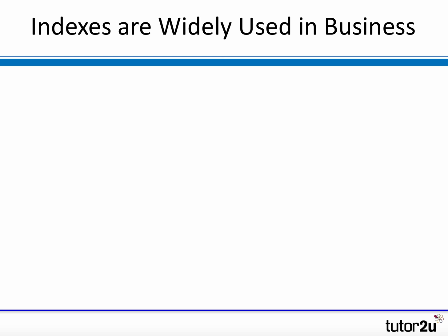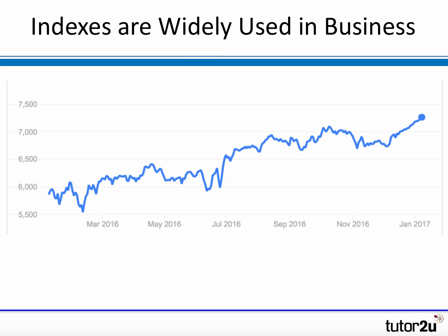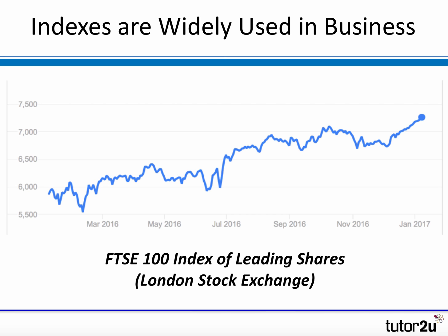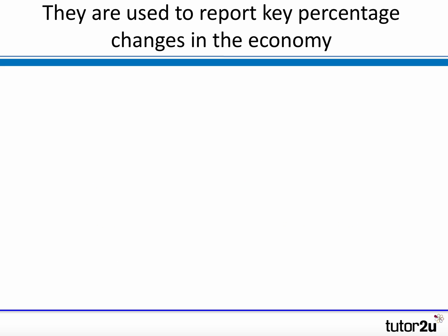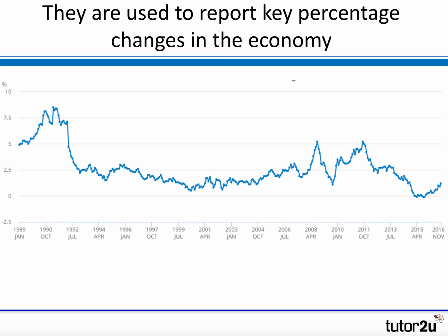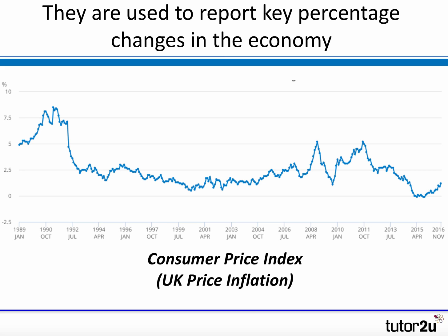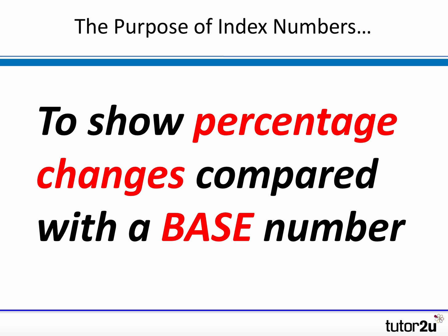We started with indexes because they're very widely used in business. Here's an example on the chart on the screen showing a well-known index you may have heard of: the FTSE 100. This is an index that shows the percentage change day by day of the value of the 100 most valuable companies on the London stock market. A similarly widely used index is the CPI, or consumer price index — perhaps the most widely used measure of the percentage change in prices. So index numbers are widely used and could come up in the exams in different ways.